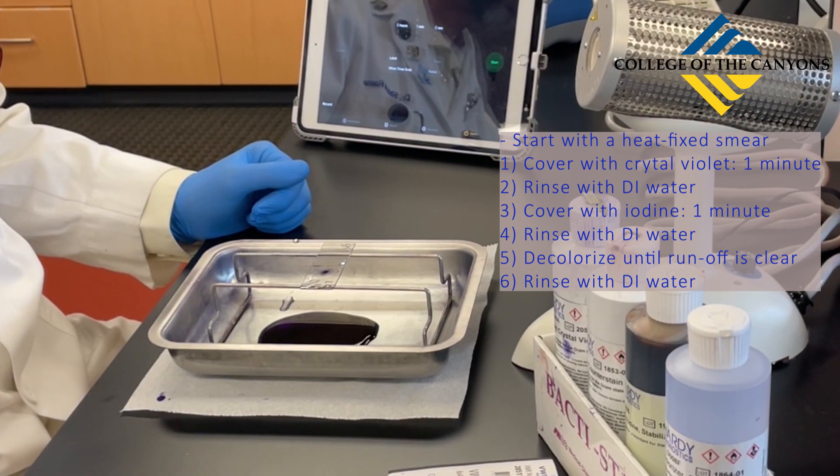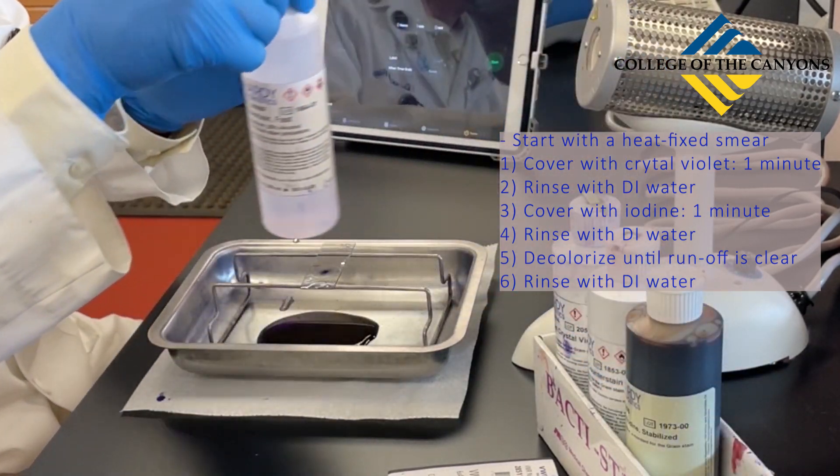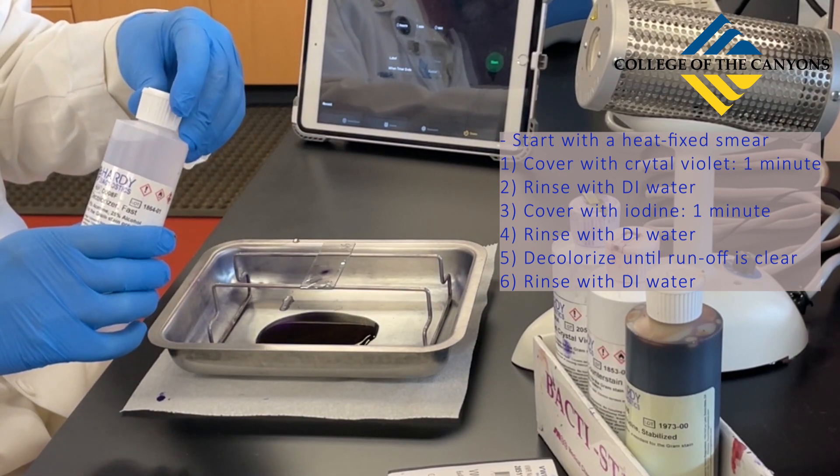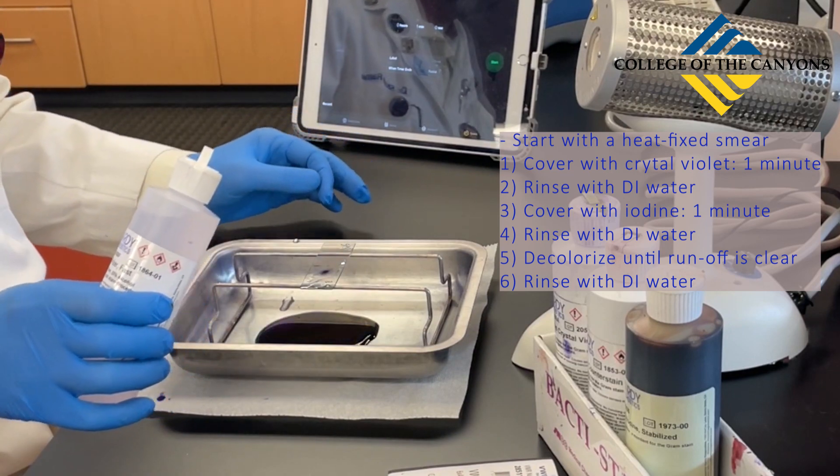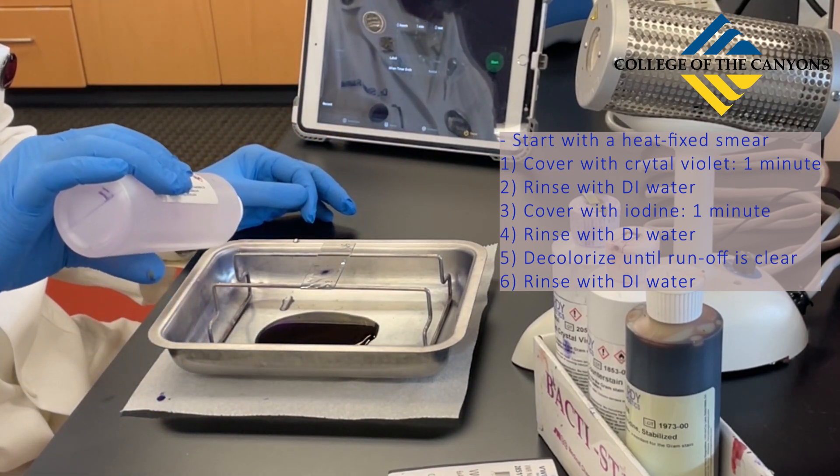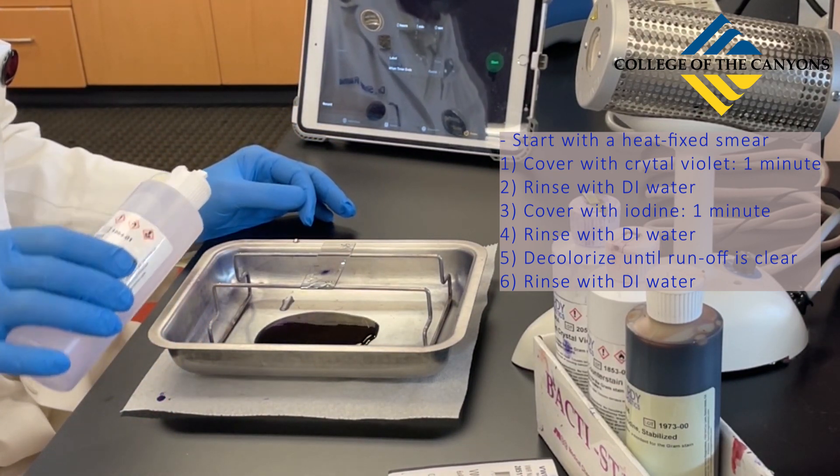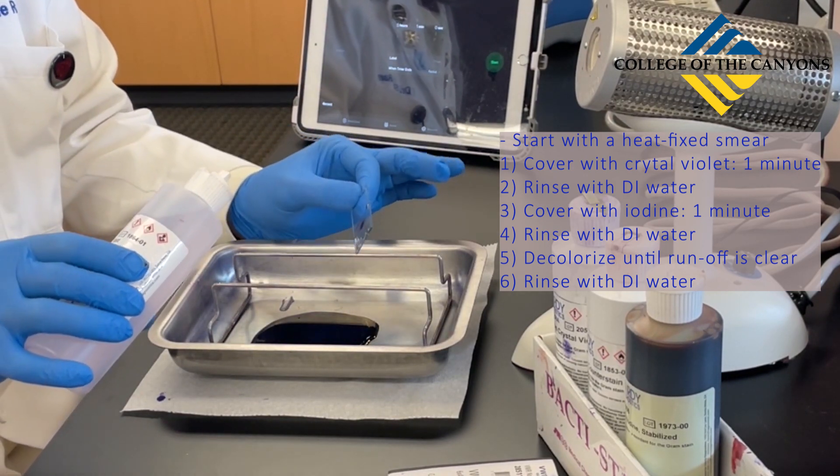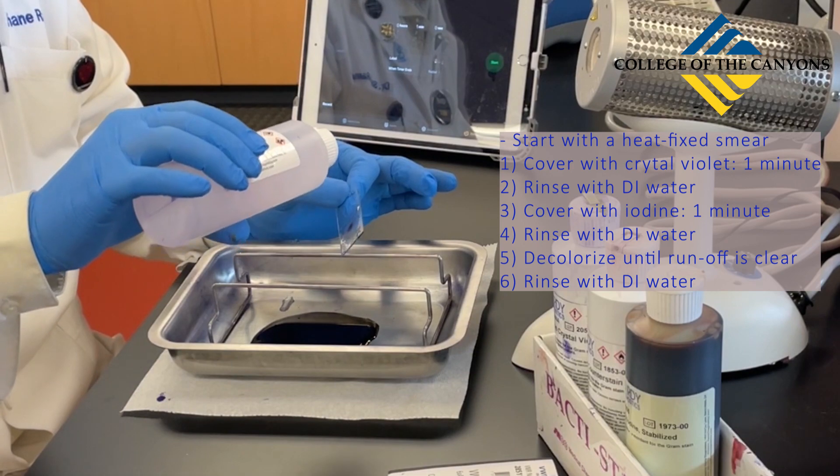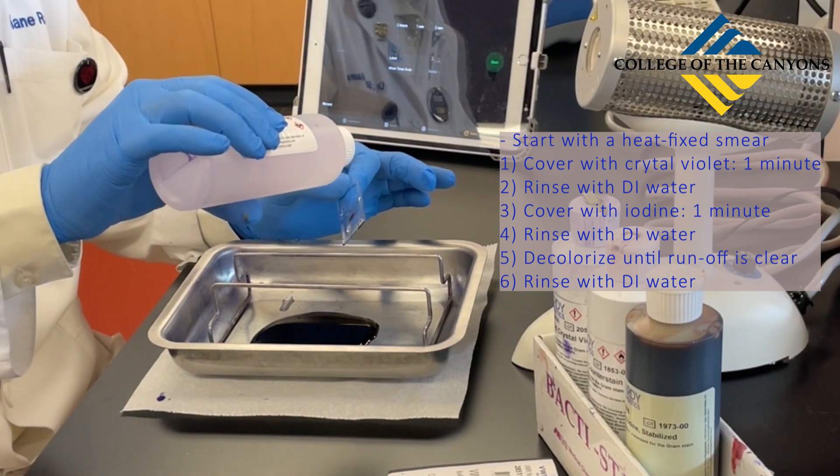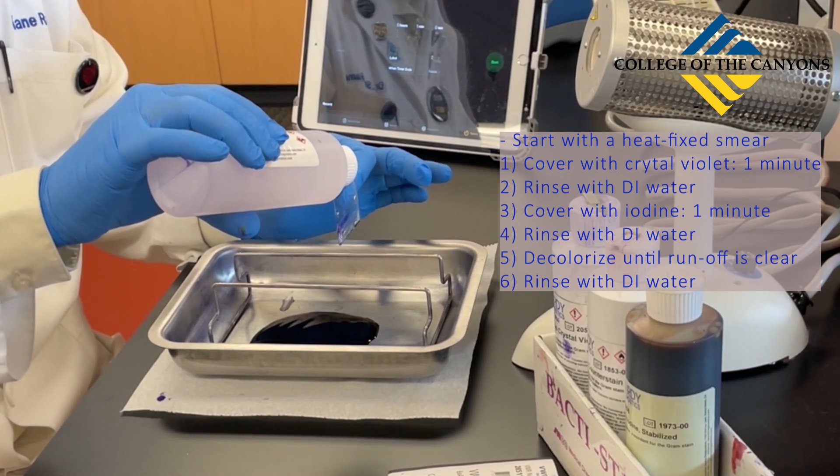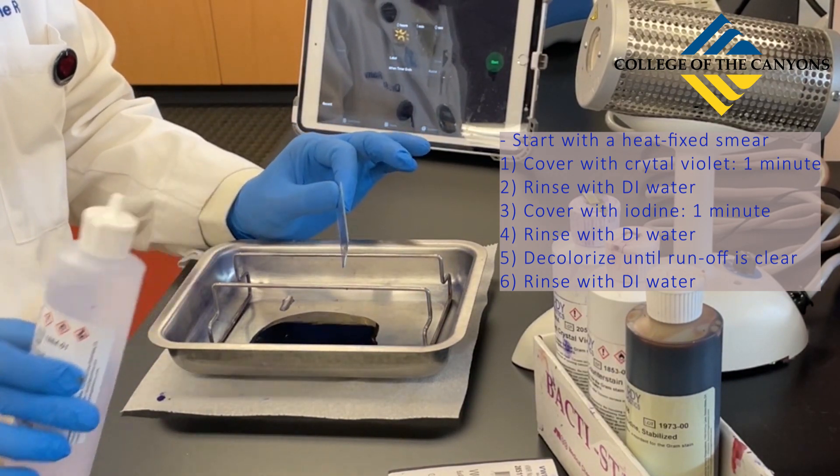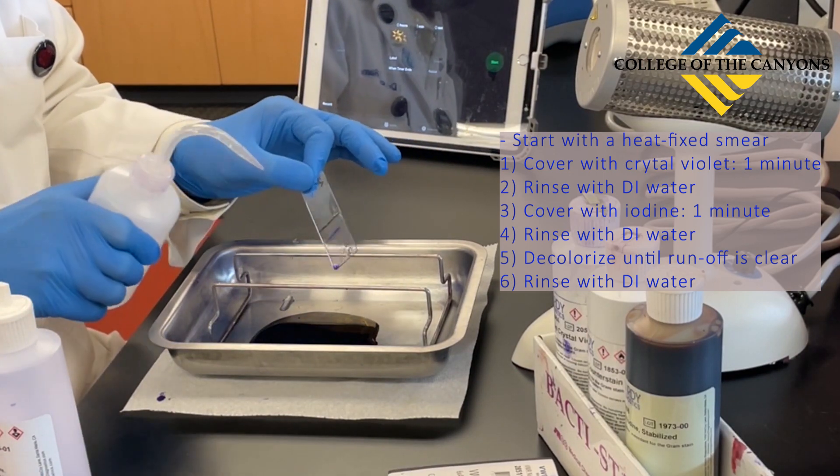Now it's time for the decolorization step. This is the most crucial part of the gram stain procedure. Take the decolorizer and give it a test squeeze to see how it drips out of the bottle. Then carefully drip it onto your slide where the smear is until it runs clear, being careful not to over or under decolorize. Notice that the smear on the right was slightly under decolorized.